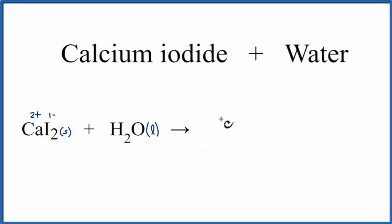So we have Ca2 plus, and then we have the iodide ion, I minus.